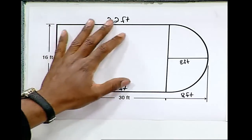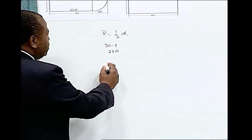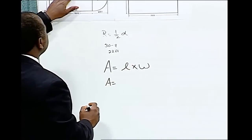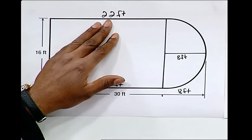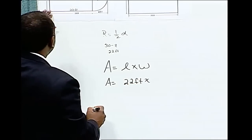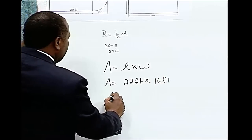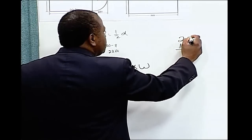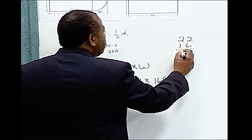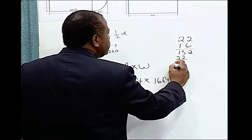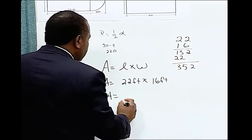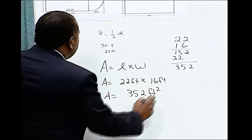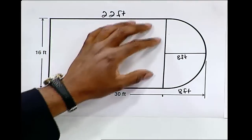The first thing we're going to do is find the area of the rectangle. The formula for the area of a rectangle is A equals length times width. In this particular problem, the length is twenty-two feet times the width, which is sixteen feet. We multiply twenty-two times sixteen and we get the area is three hundred and fifty-two square feet. This is the area of the rectangle.